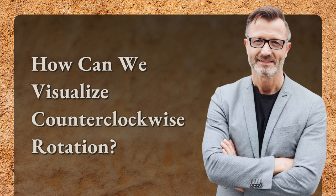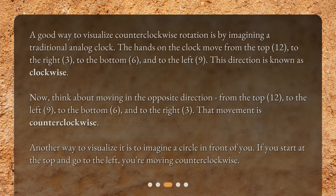How can we visualize counterclockwise rotation? A good way to visualize counterclockwise rotation is by imagining a traditional analog clock. The hands on the clock move from the top (12), to the right (3), to the bottom (6), and to the left (9). This direction is known as clockwise.